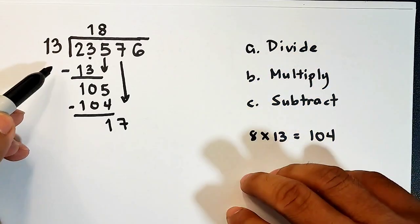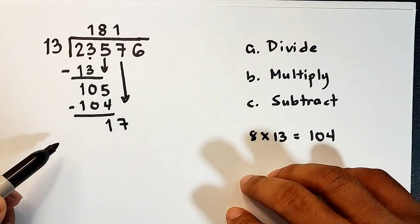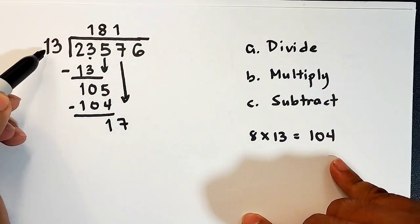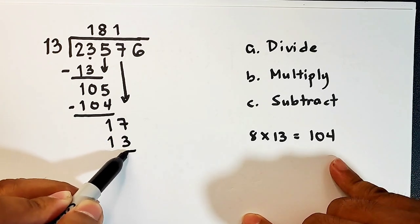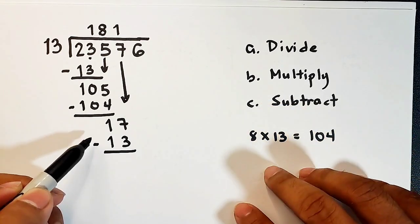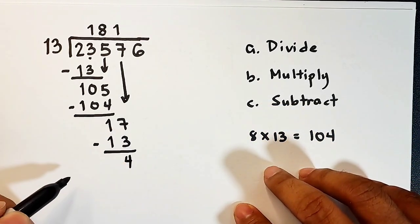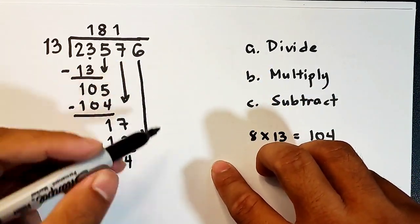We will start here again. And 17 divided by 13 is definitely equal to 1. So multiply: 1 times 13. That is equal to 13. Then same thing you need to do. You need to subtract. 17 minus 13 is equal to 4.